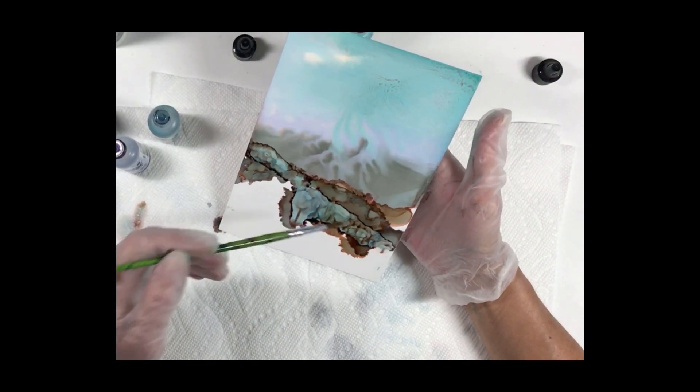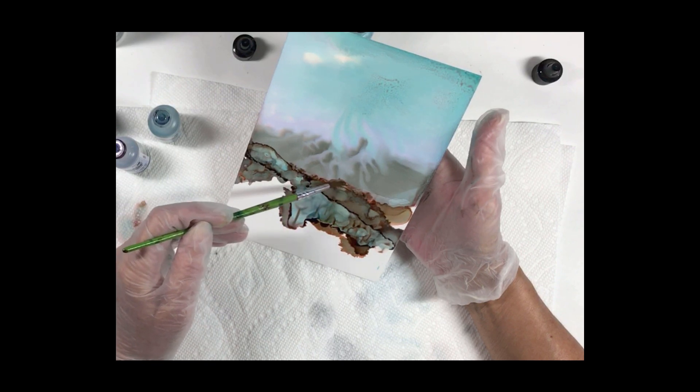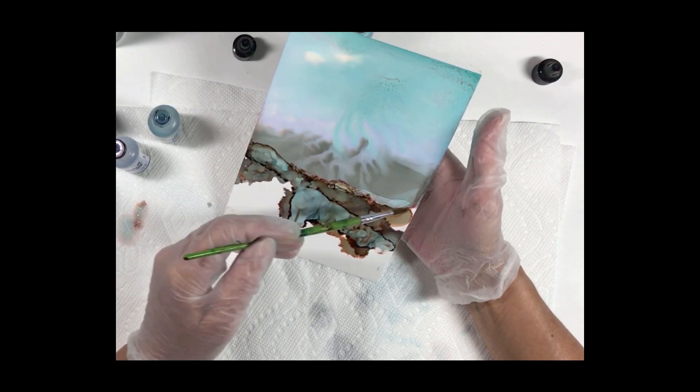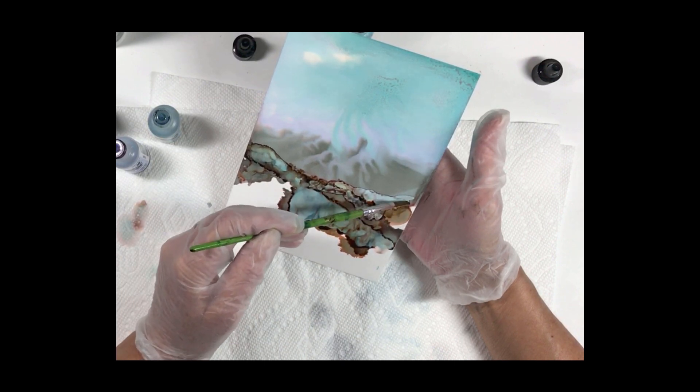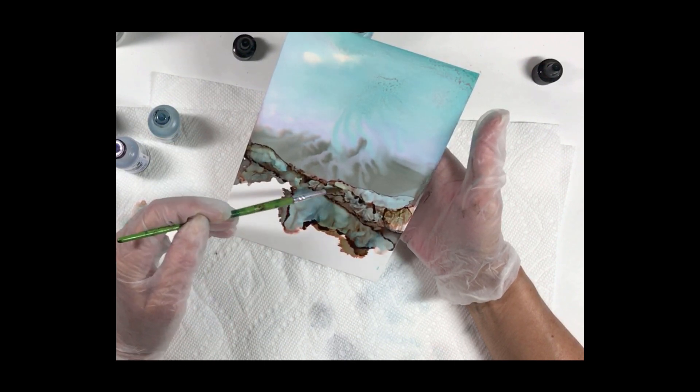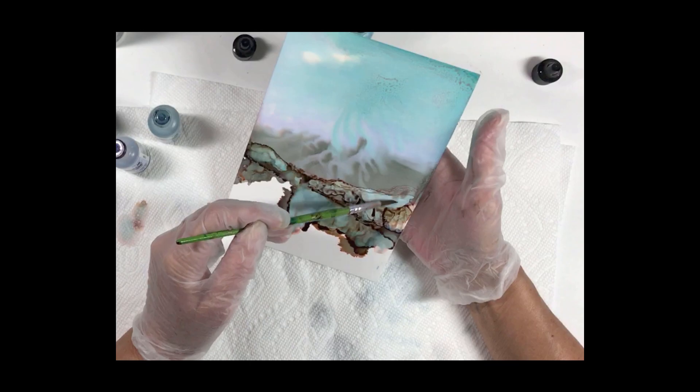I'm going to continue to add alcohol along this mountain ridge changing the shape a little bit and letting it mix in with the ink below and create some interesting effects in areas of light and dark.